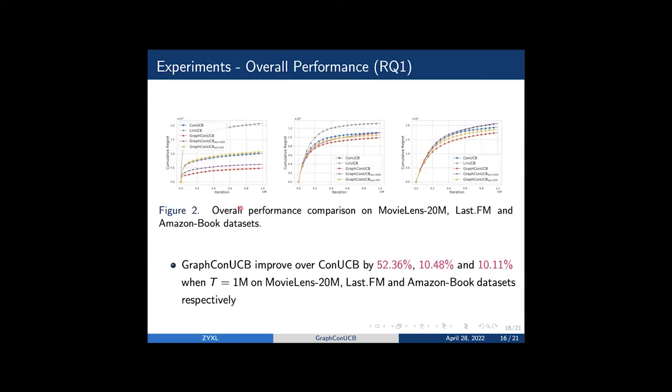To answer the first research question, we conduct experiments on three real-world datasets: MovieLens20M, LastFM, and AmazonBook datasets. As we can see, our algorithm improves SOTA baseline by a large margin. Specifically, graph-convUCB improves over convUCB by roughly 50%, 10%, and 10% on three datasets respectively.